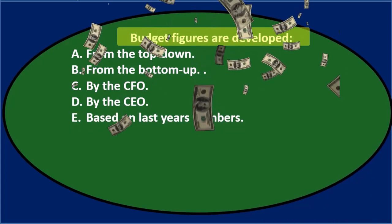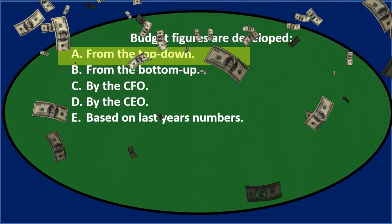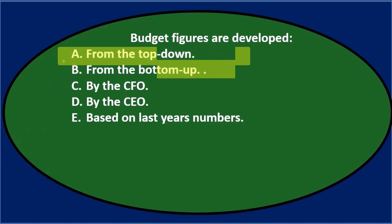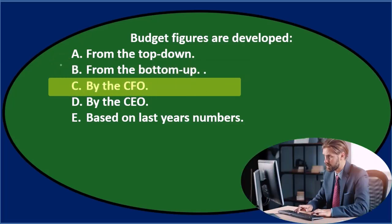Budget figures are developed A, from the top down. If we see that and say I'm not even sure what we're talking about, top down. And then B says from the bottom up. So again, we might say I'm not really sure on those two. And then C says by the CFO, which is the chief financial officer. That sounds kind of reasonable, possibly.